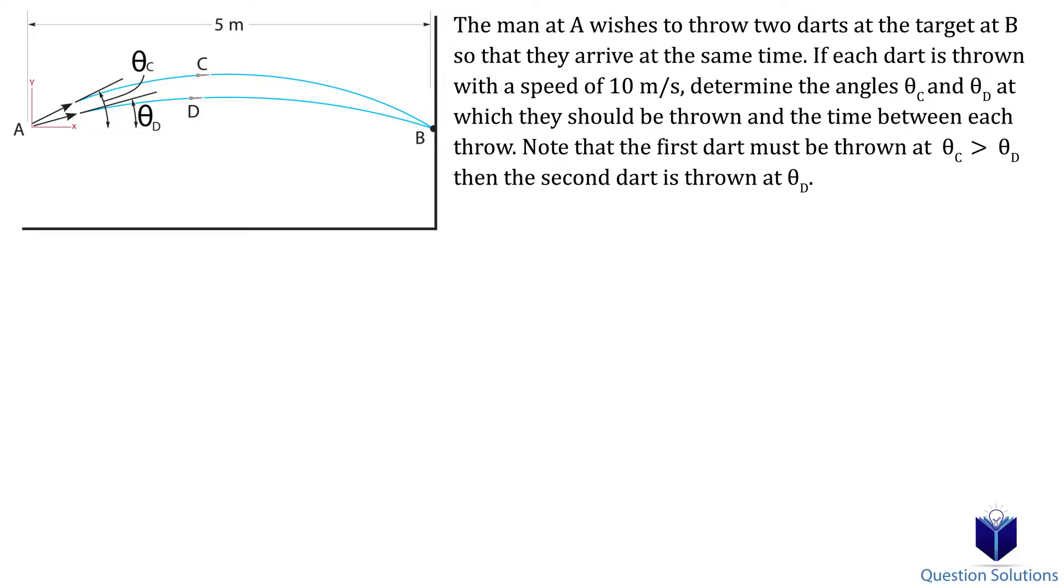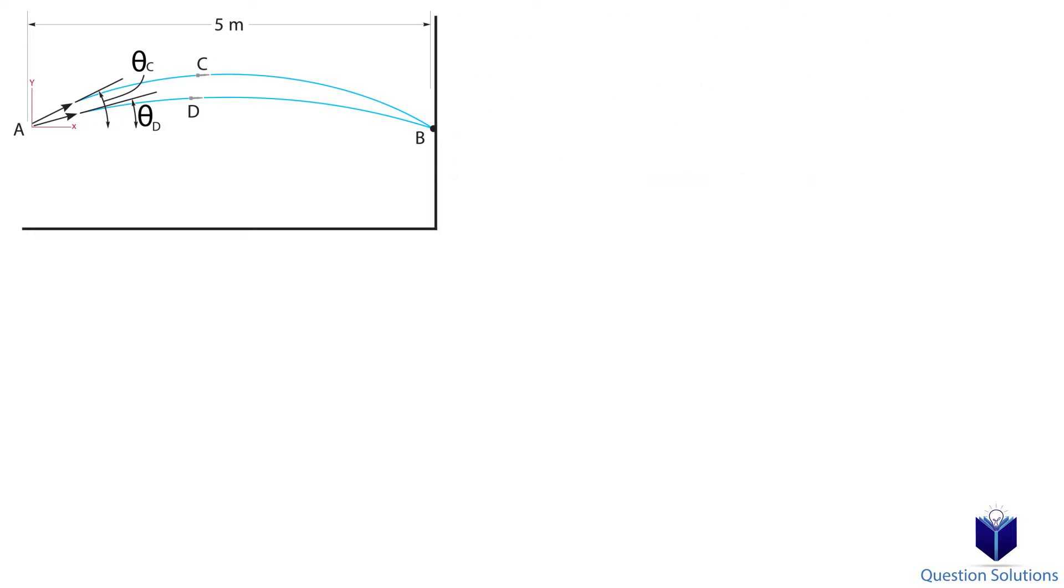Using our simplified diagram and coordinate system, let's write down what we know. In the horizontal direction, the darts start at a position of 0 meters. The final location, B, is at 5 meters. The initial velocity for the darts is 10 cos theta.